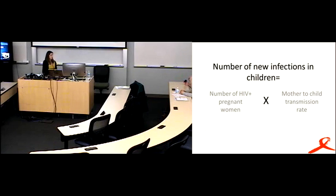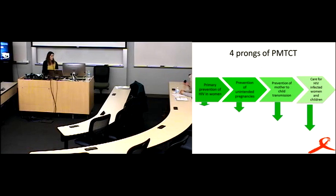So, kind of getting back to basics, what do we do to reduce mother-to-child transmissions? New infections obviously equal the number of HIV-positive pregnant women times the mother-to-child transmission rate. So, there's four prongs of PMTCT that we talk about traditionally. And we have to target each prong if we want to reduce mother-to-child transmission. The first one is primary prevention of HIV in women. The second one, and sometimes controversial, is prevention of unintended pregnancies. Then, the third prong is the regular prevention of mother-to-child transmission using drugs, usually. And then, finally, the care for HIV-infected women and children.